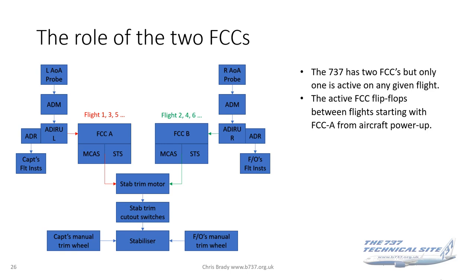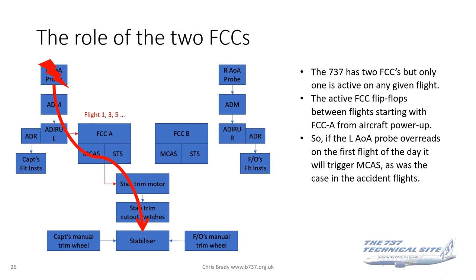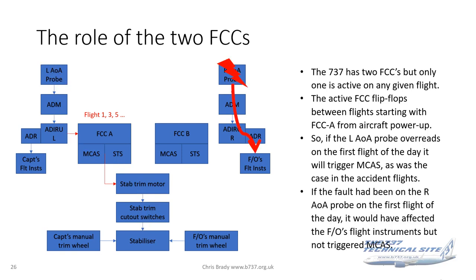The active flight control computer flip-flops between flights, starting with FCC-A from aircraft power-up: flight 1 uses FCC-A, flight 2 FCC-B, flight 3 FCC-A, and so on. So if there's a failure in the left-hand angle of attack probe, or it over-reads on the first flight of the day, that will trigger MCAS — which was the case in both accident flights. If the fault had been on the right-hand probe on the first flight of the day, it would have affected the first officer's flight instruments but not triggered MCAS, because FCC-A is the active flight control computer.